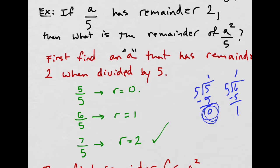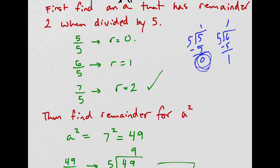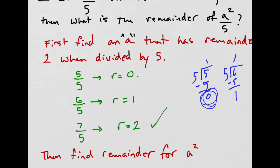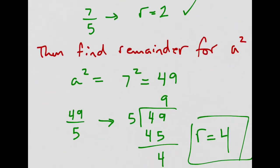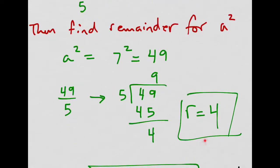And then 7 has the remainder of 2. So you can do the same division over again. So that's the first step. Find an a value that satisfies the conditions that they give you. We found an a value. The a value is 7. Now all I need to do is find the remainder of a squared. We just take a, square it, you get 49, divide, and you get a remainder of 4.